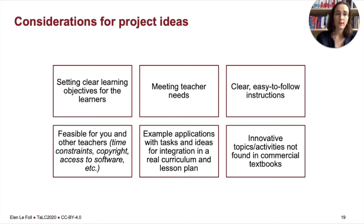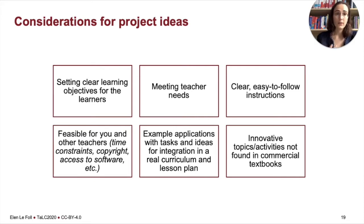These are chapters to be published in the online guide. Here are some of the considerations I gave students when working on their ideas. It was important to have clear learning objectives for the learners but also to meet specific teacher needs. The chapters needed to have very clear, easy-to-follow instructions, and so many students opted for screenshots, arrows, and bullet point lists. It was important that they took into consideration constraints such as time, resources, and access to software, so as to ensure that other teachers would genuinely be able to follow their instructions. And it was important that they go beyond simply creating a word list or a set of collocations but really integrate those in tasks and lessons.